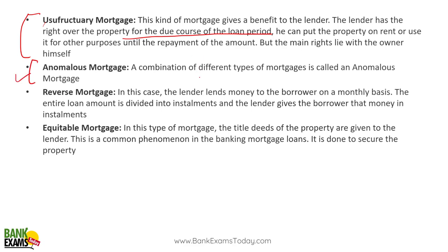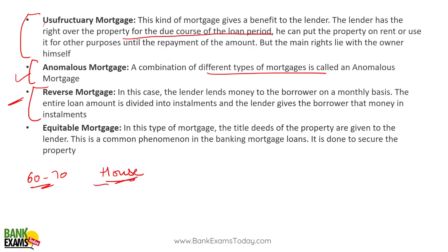Anomalous mortgage is a combination of different types of mortgages. Reverse mortgage: elderly people — say 60, 70, or 80 years old — have a house but no money to survive and do not want to sell it. They can mortgage that house in return for monthly payments from the lender, say 40,000 or 50,000 depending on the house value. At the end of the period, the heir needs to repay the loan to the bank to take back ownership of the property.